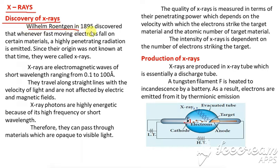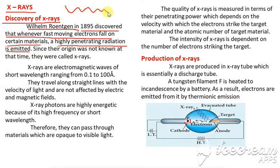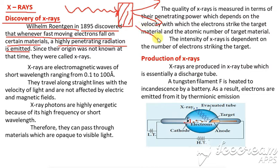Willem Röntgen in 1895 discovered that whenever fast moving electrons fall on certain materials, a highly penetrating radiation is emitted. Consider any fast moving electron striking a material — when this fast moving electron strikes a material, a highly penetrating radiation is emitted.